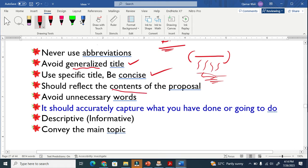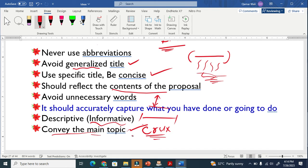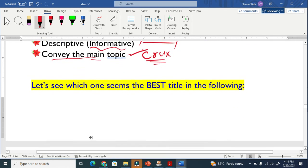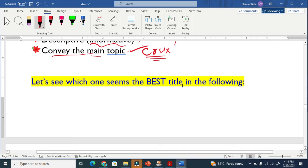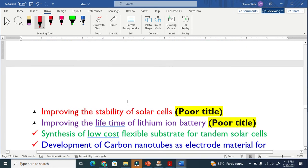Avoid unnecessary words because it will make your title long. It should accurately capture what you have done or are going to do. This one is almost the same, you see. It should be descriptive, meaning informative. If it is one sentence long, it should contain a lot of information. It can be the main topic, the crux of your research proposal so that people can easily understand what is inside the research proposal.